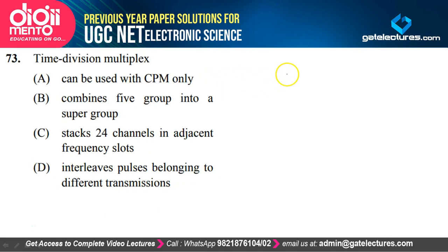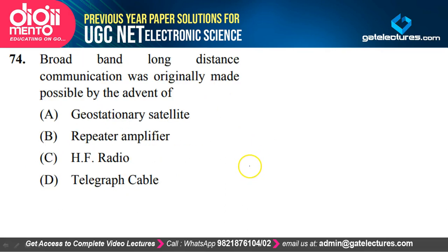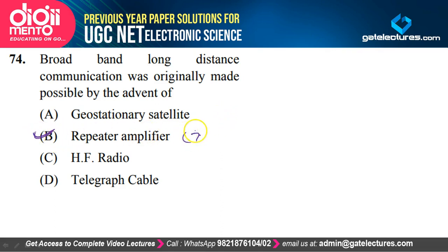Time division multiplexing interleaves pulses belonging to different transmissions — absolutely true; that is the main function of time division multiplexing. Broadband long-distance communication was originally made possible by the advent of repeater amplifiers — option B is correct.